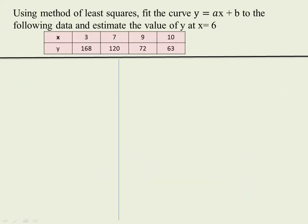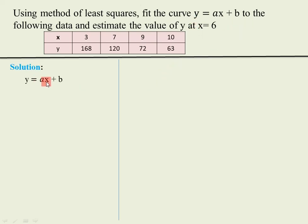Using the method of least squares we need to fit the curve of type y is equal to ax plus b for this given data, and we also have to calculate the value of y at x is equal to 6. For this numerical, first we are going to write the straight line equation: y is equal to ax plus b. This equation has two unknowns, a and b.